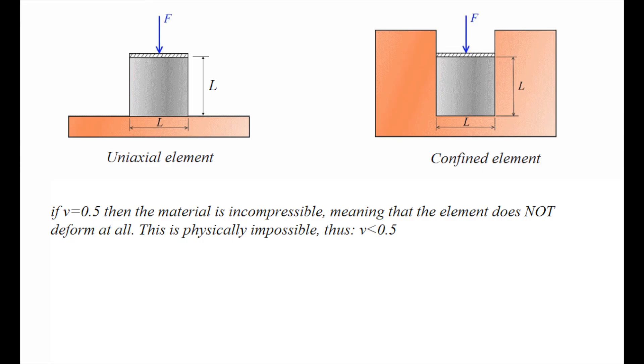There is no zero deformation. In theory, it exists. This is what we define as a rigid element, which says that there is no movement. But in the real world, it would move. So, can we have Poisson's ratio of 0.5? That is physically impossible.